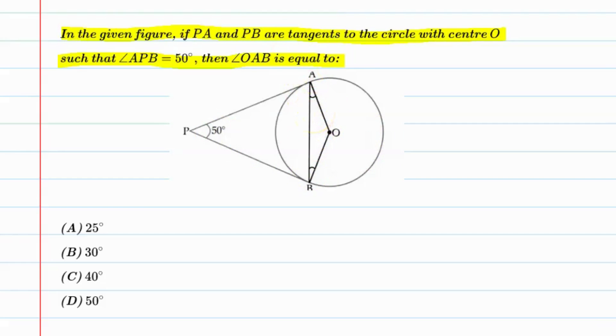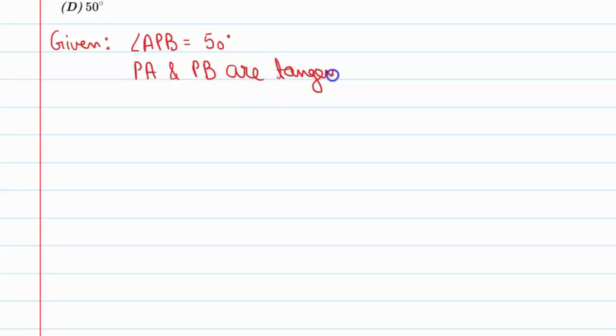Let's start. First, we will write given in this question. So given is angle APB is equal to 50 degrees and PA and PB are tangents. Alright.